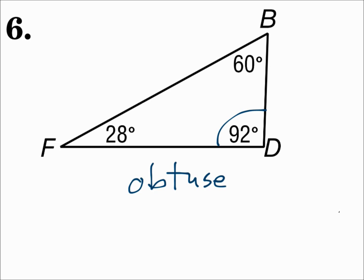Remember: if all angles are acute, then it's acute. If all angles are congruent, then it's equiangular and acute, and that congruent measure is going to be 60 degrees. If it has one obtuse angle, it's an obtuse triangle, and if it has one right angle, then it's a right triangle.